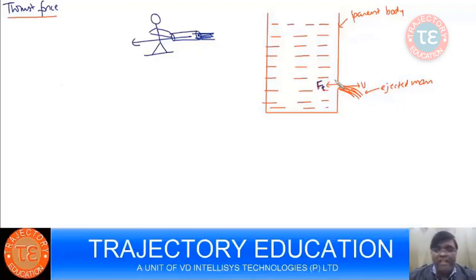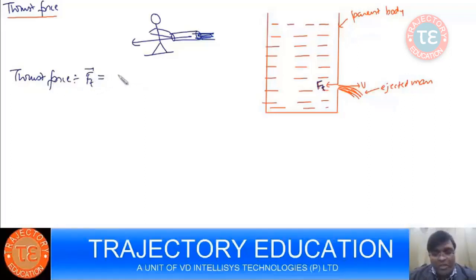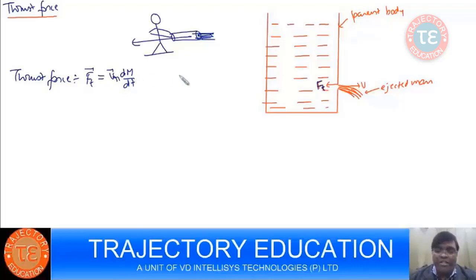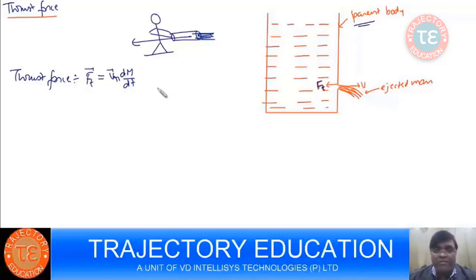It is just like a variable mass system, and we can find the thrust force. If you remember, we have the expression for the thrust force from the variable mass system discussion: it is equal to Vr × dm/dt, where Vr is the relative velocity of the ejected mass with respect to the parent body, and dm/dt is the rate of change of mass of the parent body.